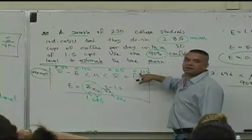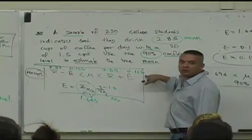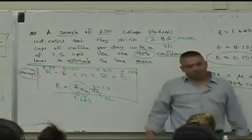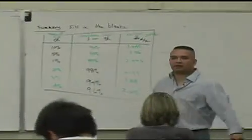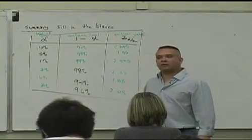So use an error that's to the nearest thousandths because you're trying to get a little more accurate. One more, right. Okay. Anybody have any questions on this one? You sure?